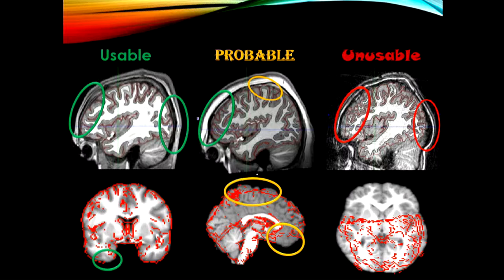And then the usable scan — it's clear, cut, simple, easy going. Everything is what it's supposed to look like, so that gives it a 1. And the functional scan on the bottom has a slight issue with the left temporal lobe, but that's perfectly fine for analysis.